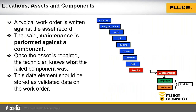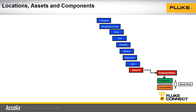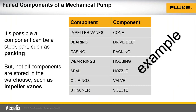Here's a slide describing where the failed component fits into the hierarchy. At the top you have your company, then unit and building, system, subsystem, and down to the asset number. Sometimes an asset can be broken into sub-assets. The field we're introducing is the failed component — shown in the yellow box — and that can be a validated field with a choice list. For a mechanical pump, examples of failed components include impeller vanes, bearings, casing, wear ring, and seal. That information goes in that field — it's the first piece of the failure mode.